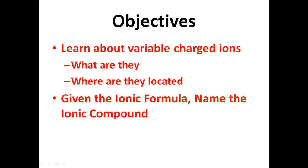Hey guys, it's Mr. Post. On today's video lesson, the objectives are going to be to learn about variable charge cations — what they are and where they're located on the periodic table — and also, given the ionic formula, can you name the ionic compound? Those are the two things we're looking at today: variable charged ions and naming ionic formulas that have variable charge cations within them.